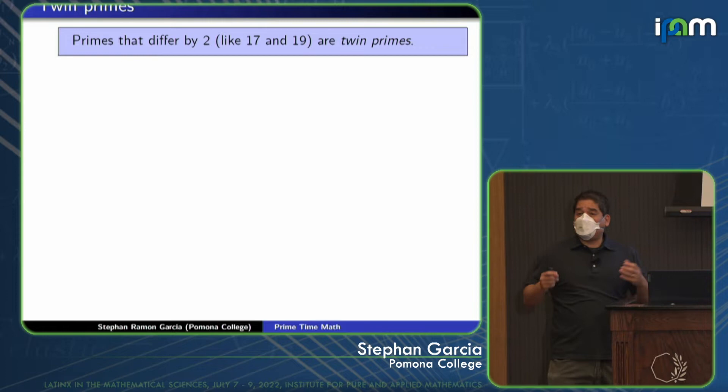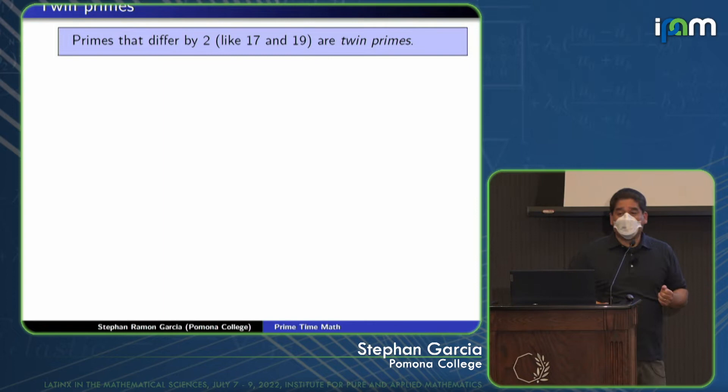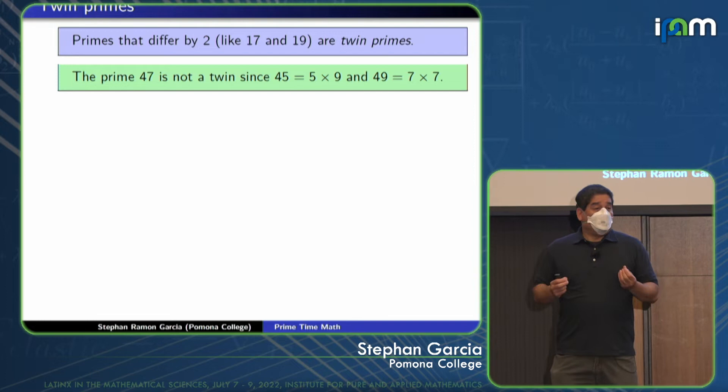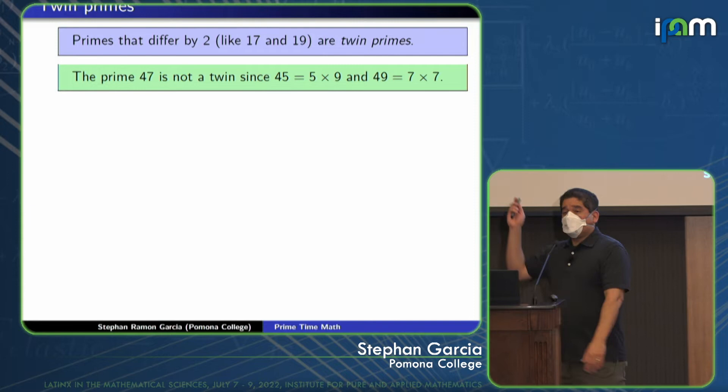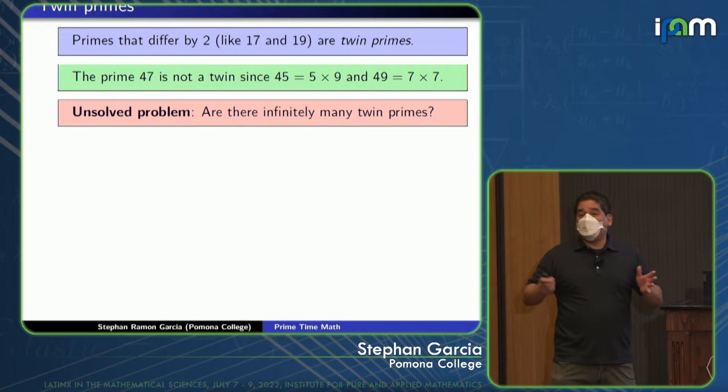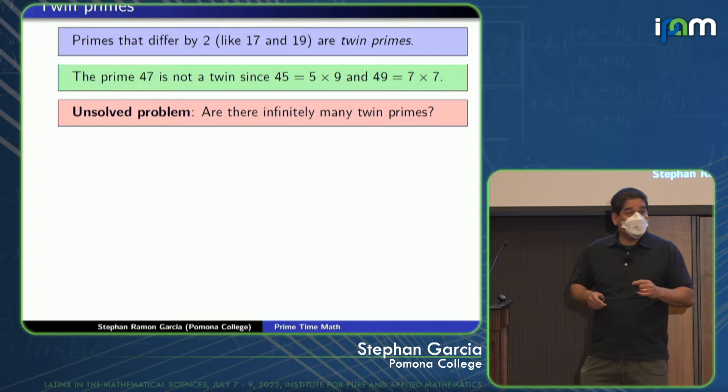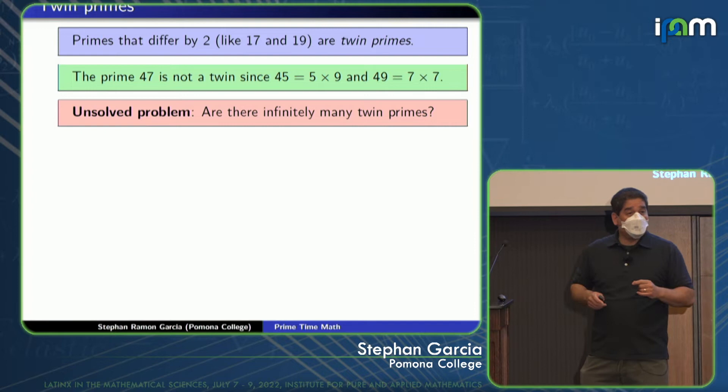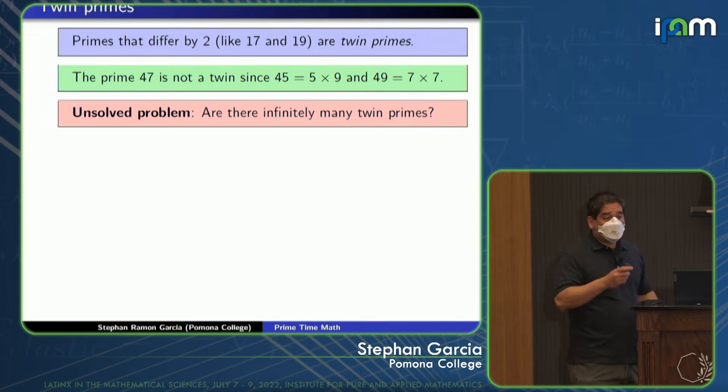Primes also sometimes come very close together. We're going to say that primes that differ by 2 are twin primes. So 17 and 19 are twin primes. On the other hand, 47 is not a twin prime. It's sort of lonely. Because if I take a look at candidates for twins, I'm looking at 45, which isn't prime, or 49, which isn't prime. This is something for the students to think about. It is a famous unsolved problem to determine whether there are infinitely many twin primes. Remember, Euclid proved 2,300 years ago that there are infinitely many primes. We still don't know whether there are infinitely many twin primes. It would bring you fame and fortune if you figured out this problem. It's a difficult problem, but people have probably been thinking about it for over 2,000 years.